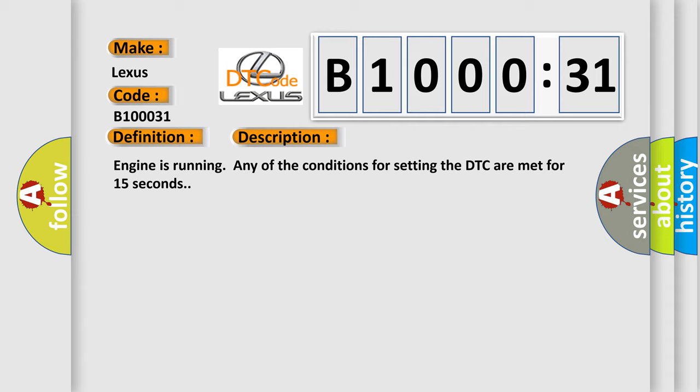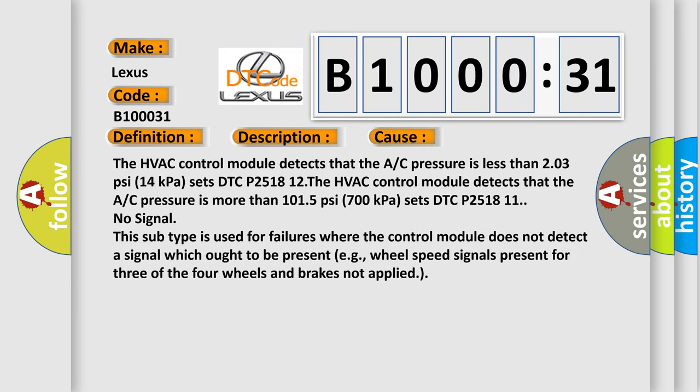This diagnostic error occurs most often in these cases. The HVAC control module detects that the A/C pressure is less than 203 PSI (14 kPa) and sets DTC P251812.